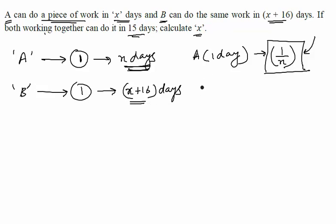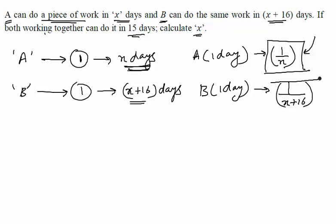Let us look at the power of B. B can complete in one day how much quantity of the work? B can complete only 1/(x+16) quantity of the work. You can very easily see that the power of A is more as compared to the power of B, that's why A is able to complete the work in less time as compared to B.